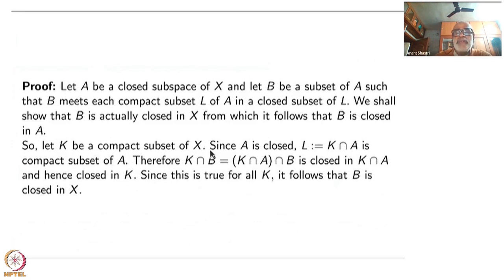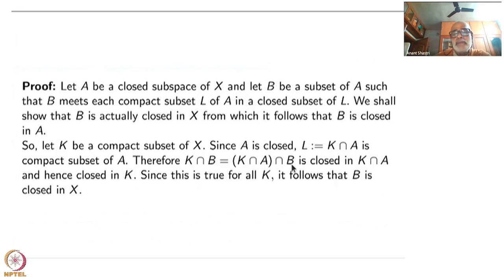So let K be a compact subset of X. Since A is closed, L = K∩A is a compact subset of A. A is closed, so K∩A is a closed subset of the whole space — so it is a closed subset of a compact subset, hence it is a compact subset of A. Therefore K∩B = K∩A∩B, and because B is a subspace of A, it is closed in K∩A, and hence closed inside K. So this is true for all K; it follows that B is closed in X.